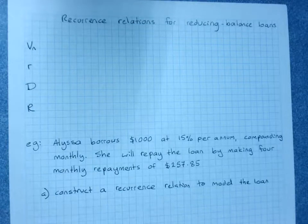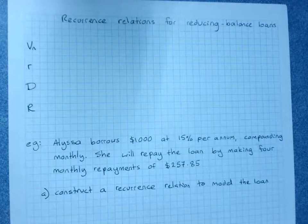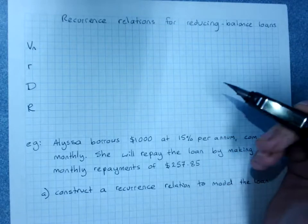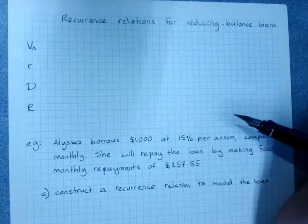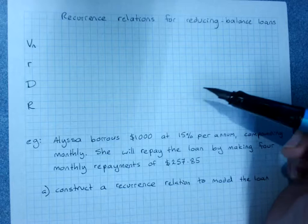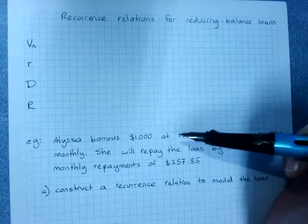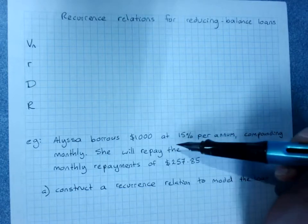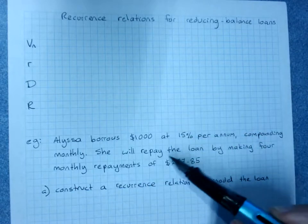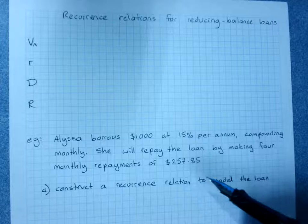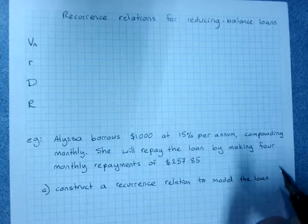Recurrence relations for reducing balance loans. You'll remember our recurrence relationships where we start with the starting value and model a number pattern either arithmetically or geometrically or as a combination of both. Reducing balance loans have an increase of compound interest — a percentage increase, so that's a geometric increase — and you're paying it off with a subtraction of a fixed amount, so that's an arithmetic aspect of the number pattern.